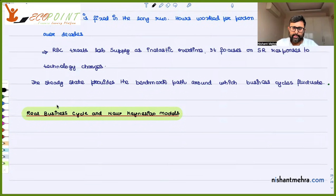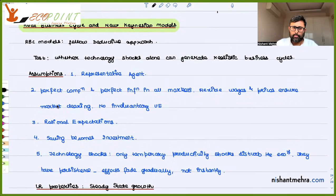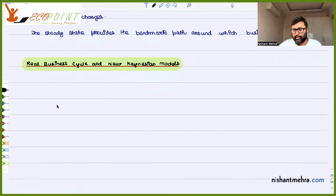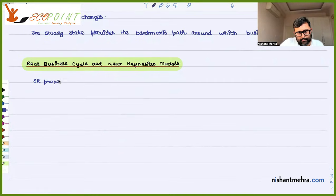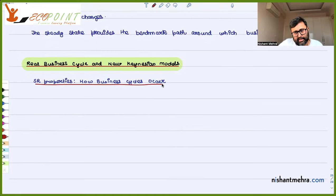Let's take the discussion further about real business cycles and new condition models. Yesterday we talked about long-run properties of steady growth, and we also spelled out various assumptions of RBC models. That was a deductive approach. Now we are going to talk about short-run properties — mainly how business cycles occur.